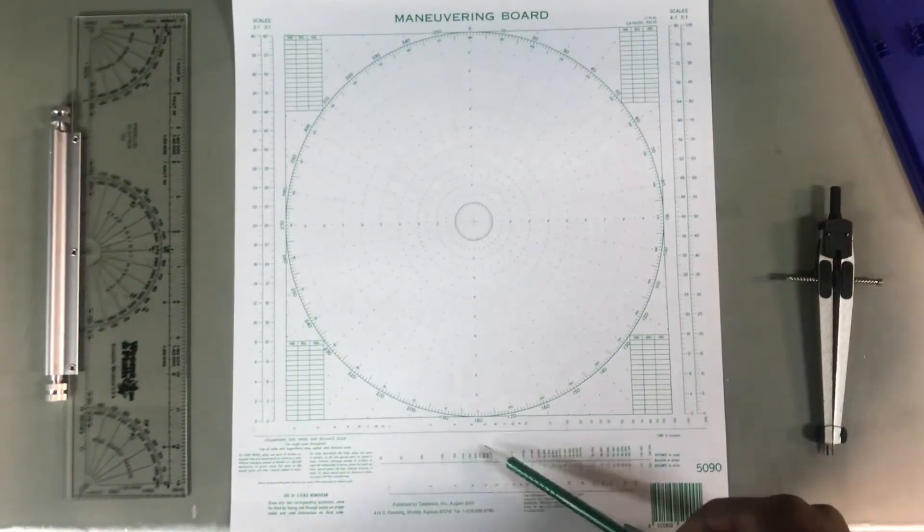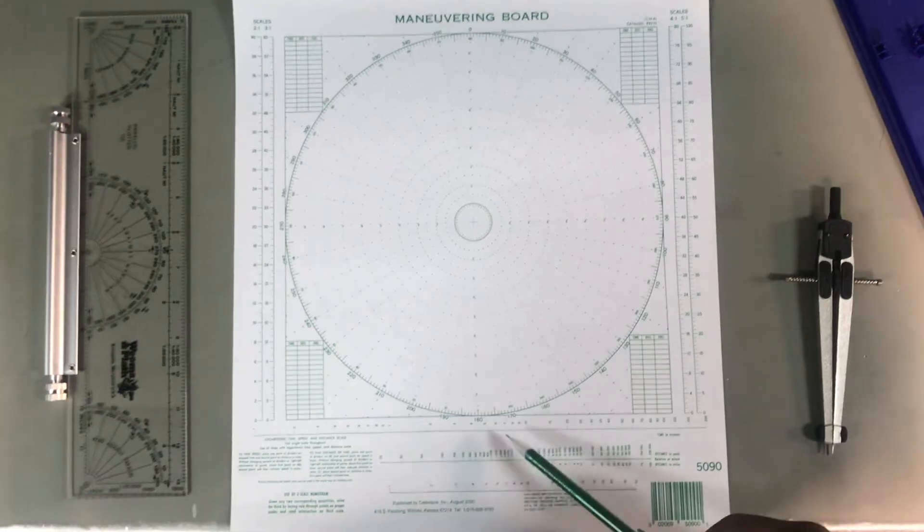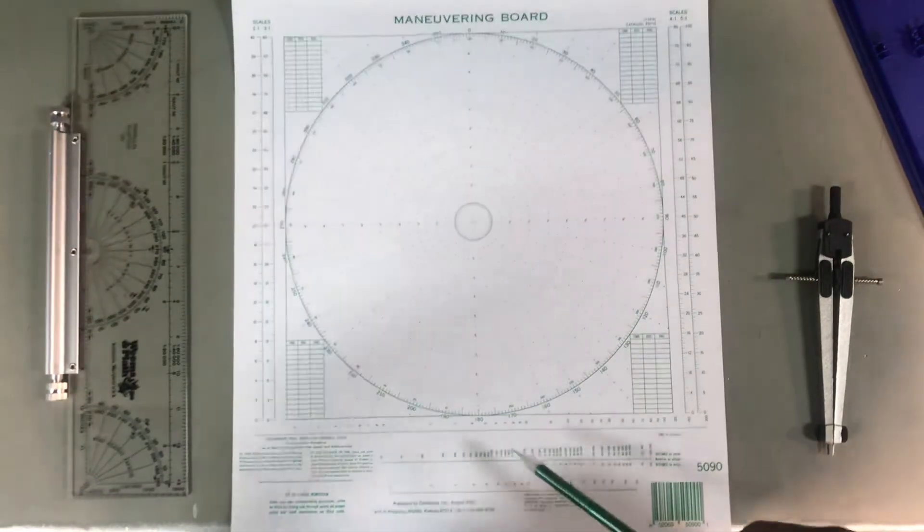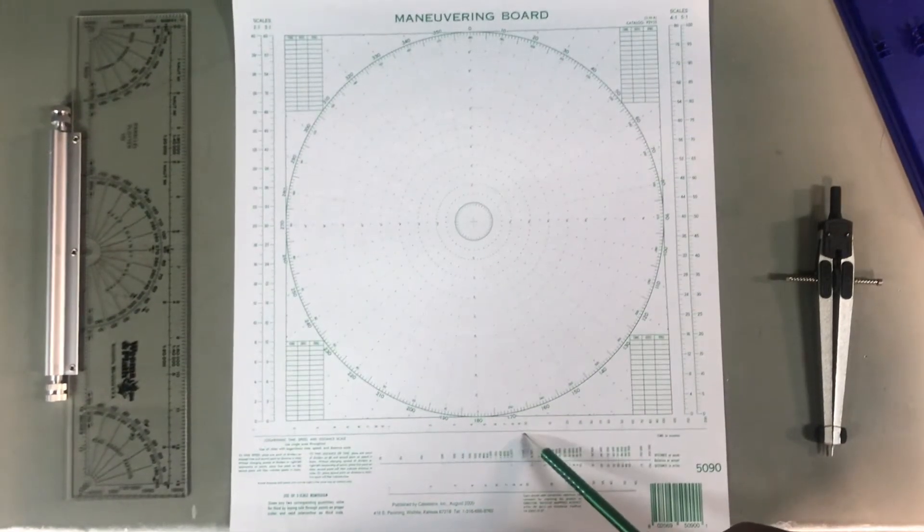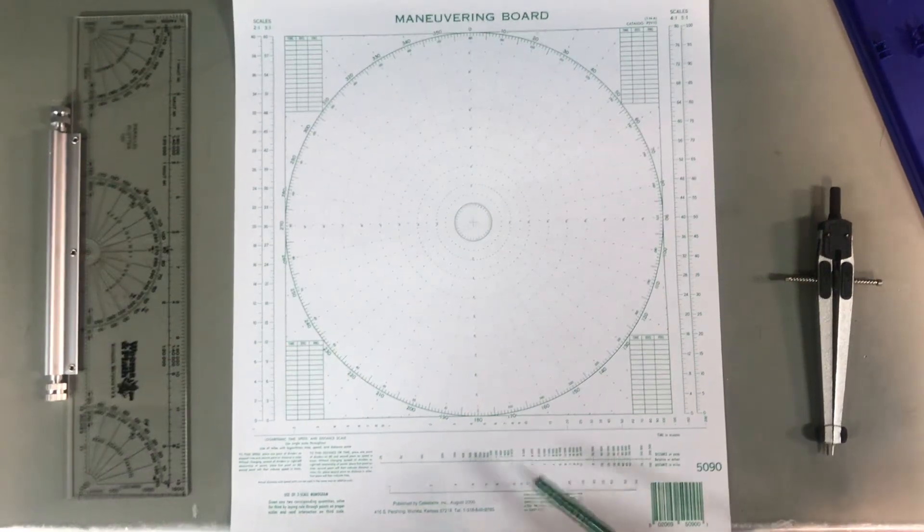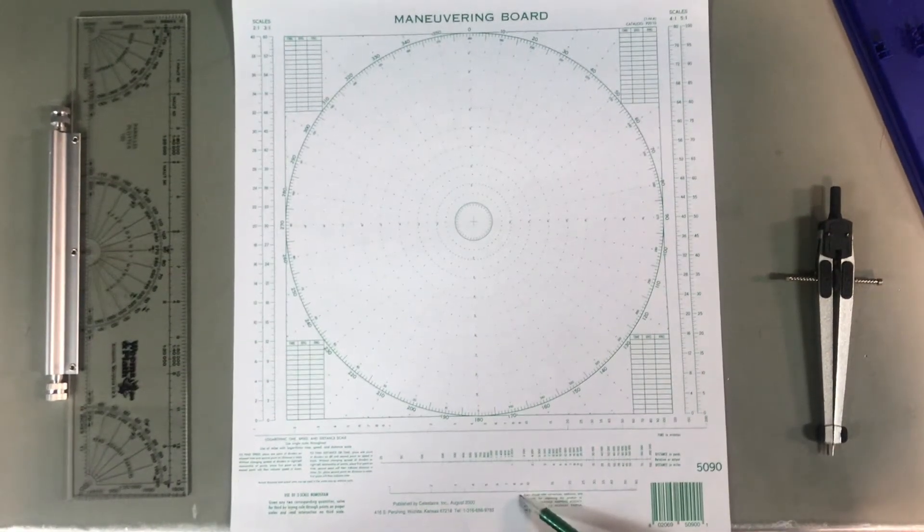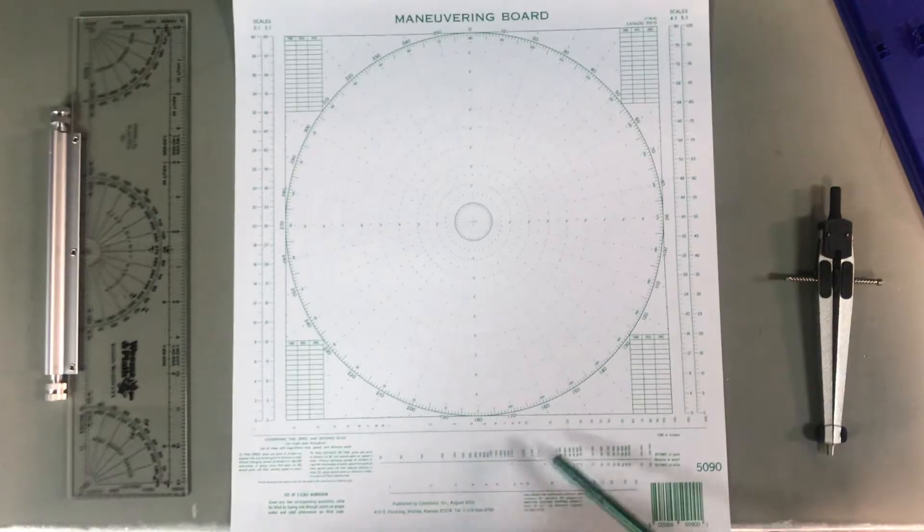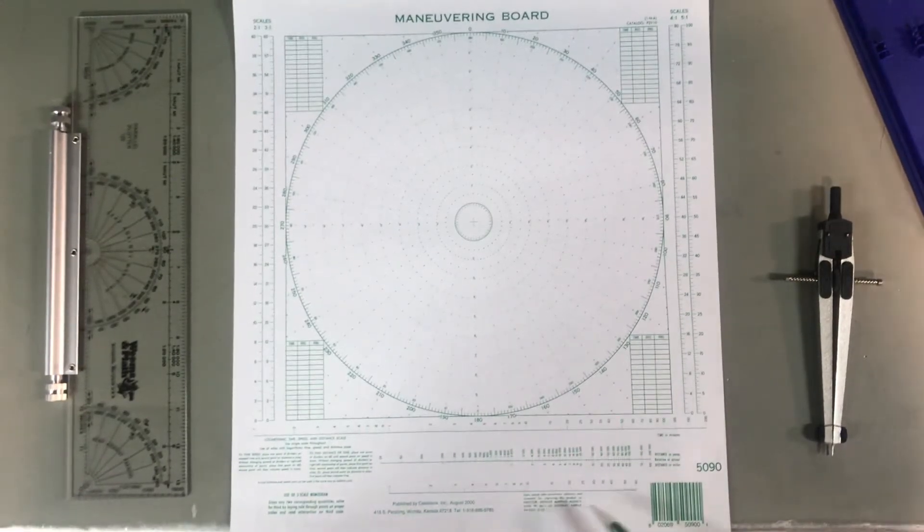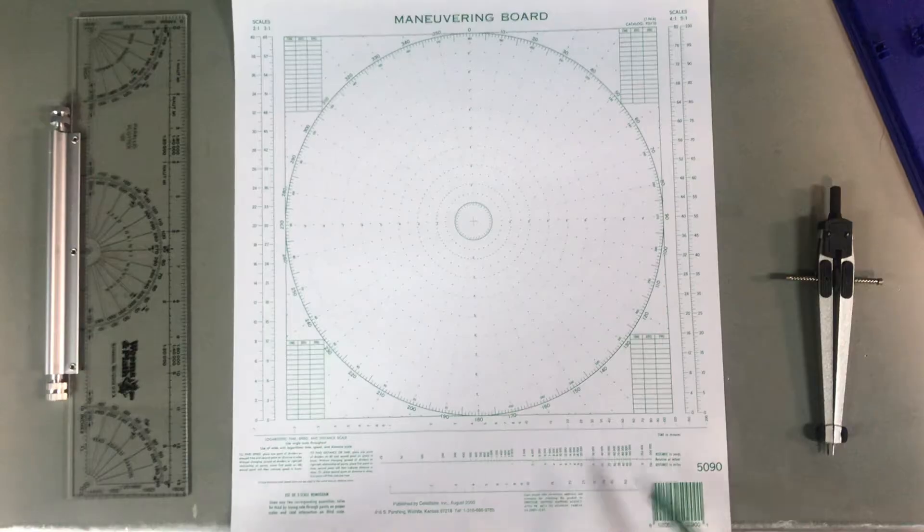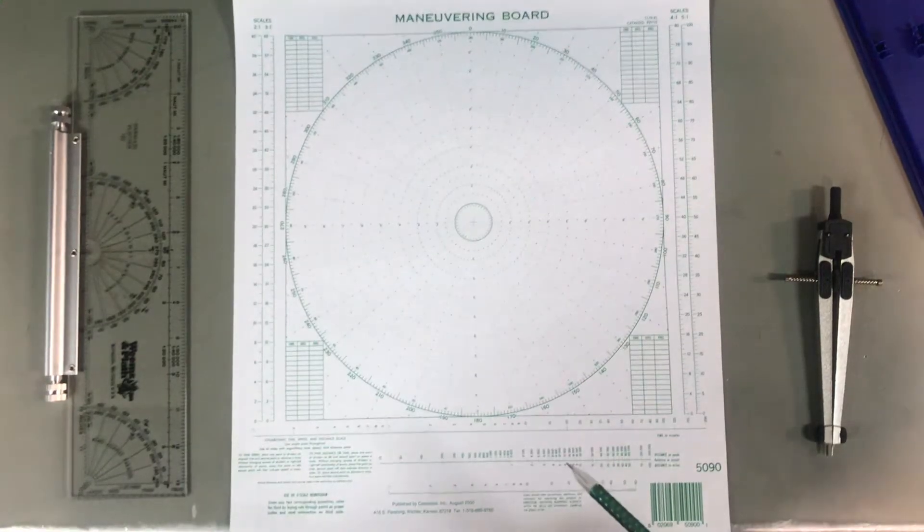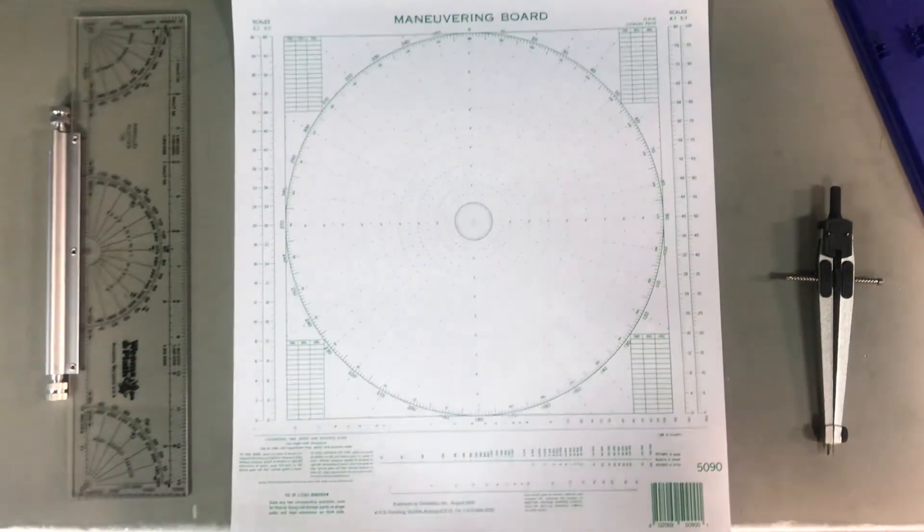So down here on the bottom, these lines here are used for your calculations. As far as your relatives, you got time, distance, speed and knots. Now, your speed and knots and your time are interchangeable, unless you have something that's over 60. Then it won't be. Alright, so let's go ahead and kick this thing off.